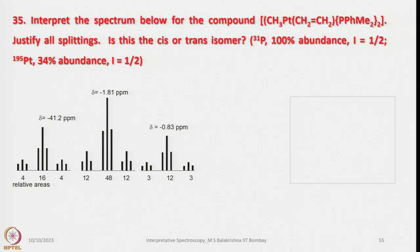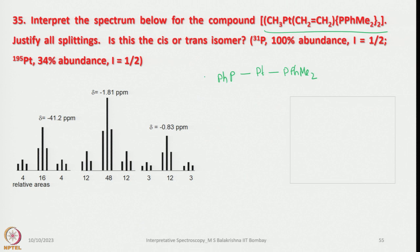Let us look into another example: interpret the spectrum for the platinum compound shown — a 4-coordinate platinum compound — and justify all splittings. When 4-coordination is present with platinum, we have to determine whether it is cis or trans. Let us write the trans isomer first. Looking at this square planar complex, a C2 axis of rotation makes both phosphorus atoms in the trans isomer magnetically and chemically equivalent.